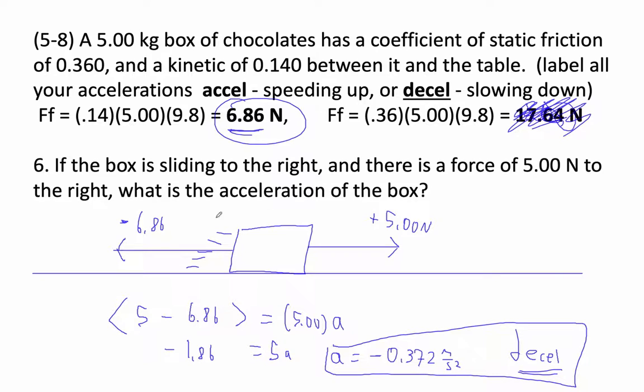And notice that the velocity is positive, right? Our velocity is positive, but our acceleration is negative. Whenever that's the case, you're slowing down. You're decelerating. Now, if you don't want to use decelerate and accelerate, you can say slowing down. That works too. But you have to label it accelerating or decelerating.